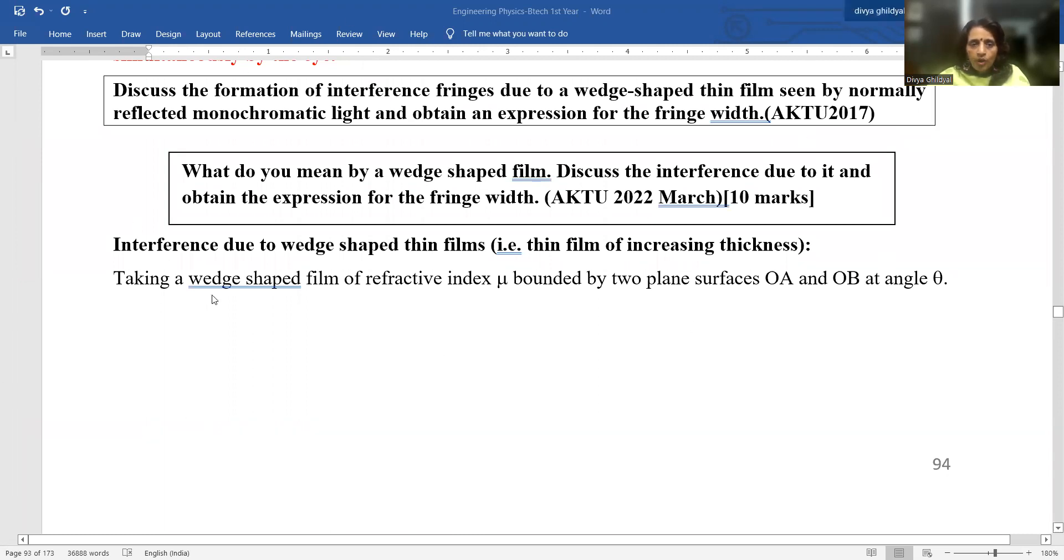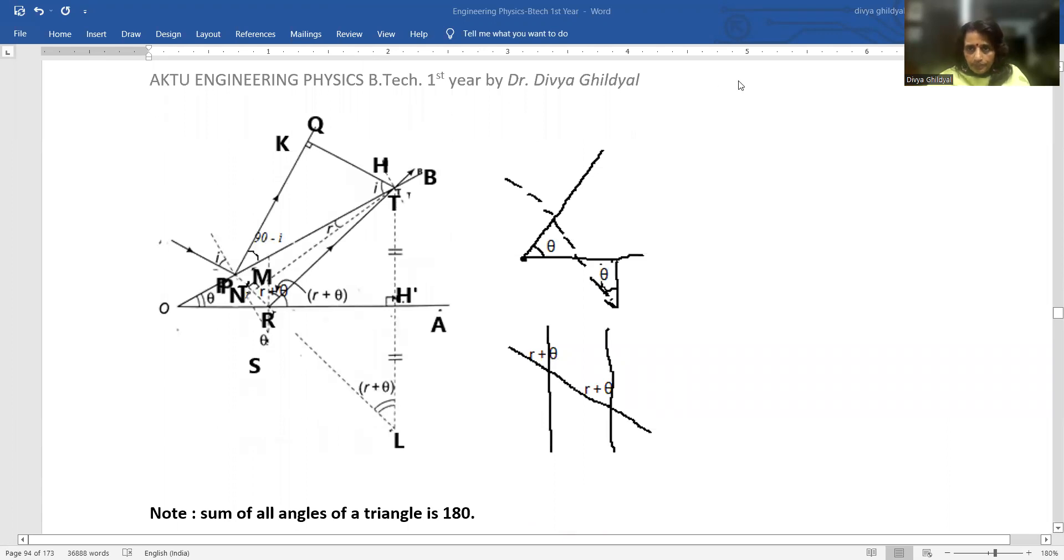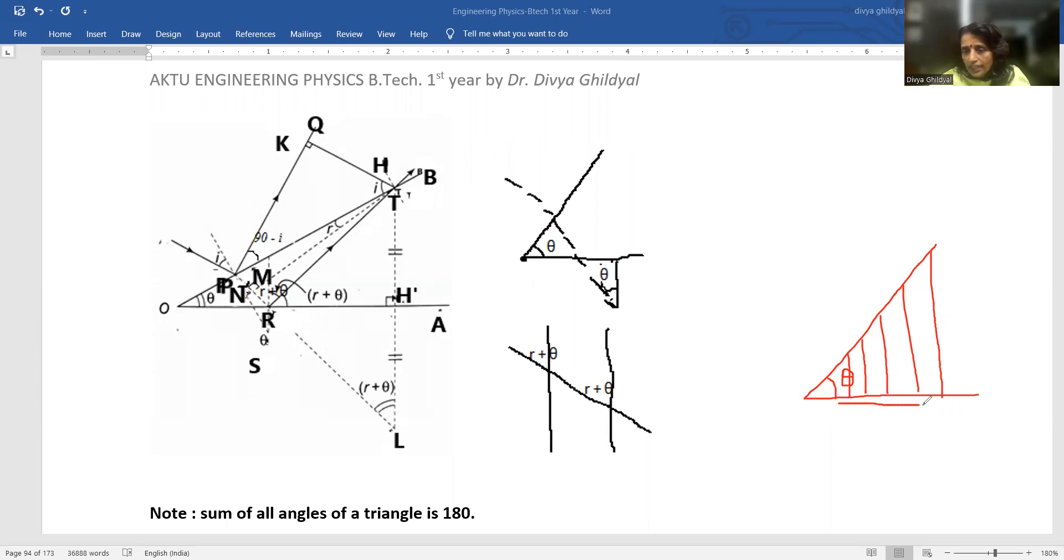First let us clarify what is meant by the term wedge shape. If two thin film layers are inclined at an angle theta, this is known as wedge shape, or thin film of increasing thickness which is responsible for concentric circles in the Newton ring experiment. Here it is a thin film of increasing thickness: t1, t2, t3, t4, t5, where t5 is greater than t4, t4 is greater than t3, and so on.